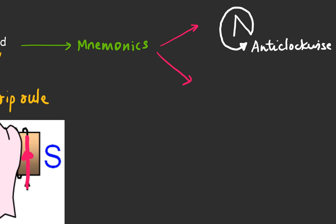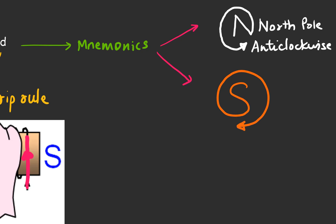When the pole is north, the direction of the current is always anti-clockwise. So whenever you find that at one edge of the solenoid the current is in the anti-clockwise direction, you immediately know that it is the north pole. And if you write your S also in a stylish way, you will notice that whenever the current direction is clockwise, that edge of the solenoid represents a south pole.